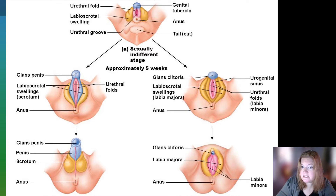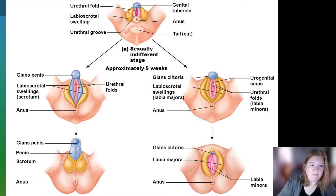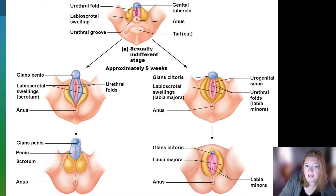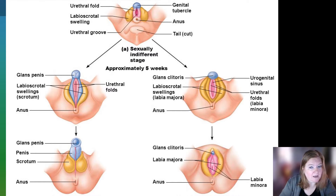You can see these are analogous structures. What becomes the penis in people with testicles who have the SRY gene would be the clitoris in people who have a vagina and who do not have the SRY gene.